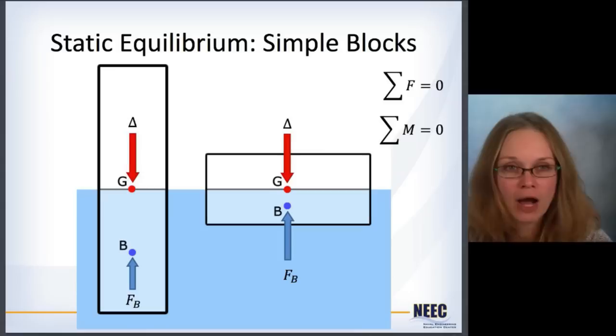So example here, again, with some simple blocks. It can be a ship. It can be as simple as these blocks, right? It doesn't matter how close or how far away G and B are. As long as they are aligned vertically, they are in static equilibrium.